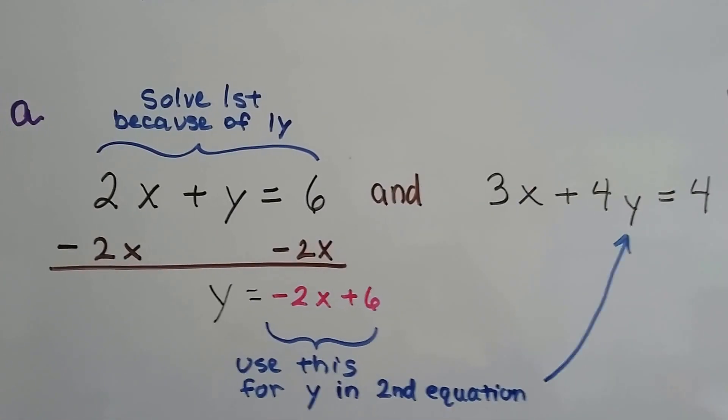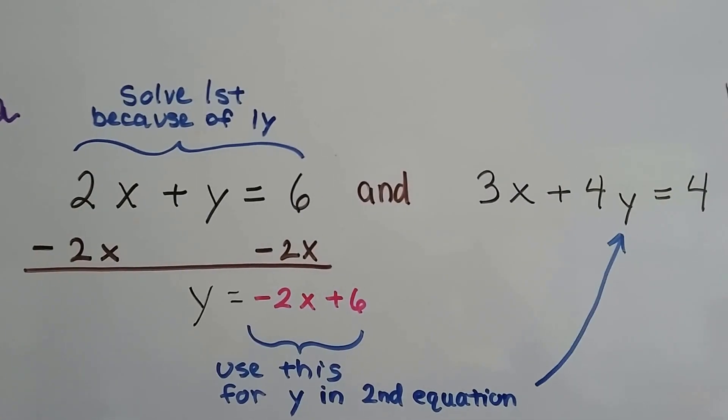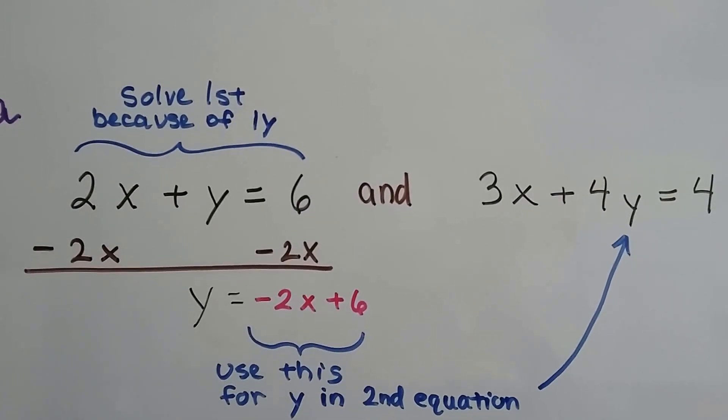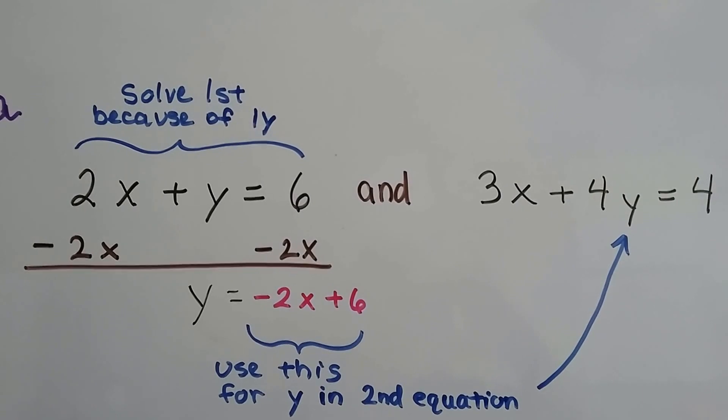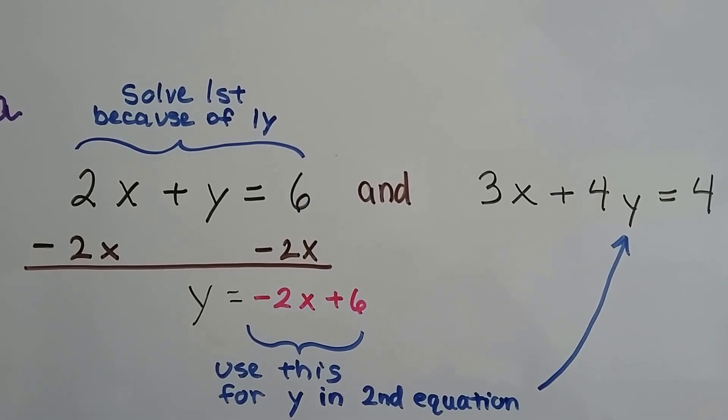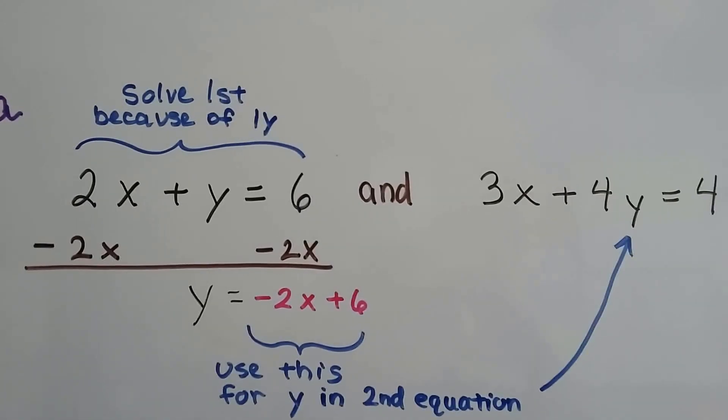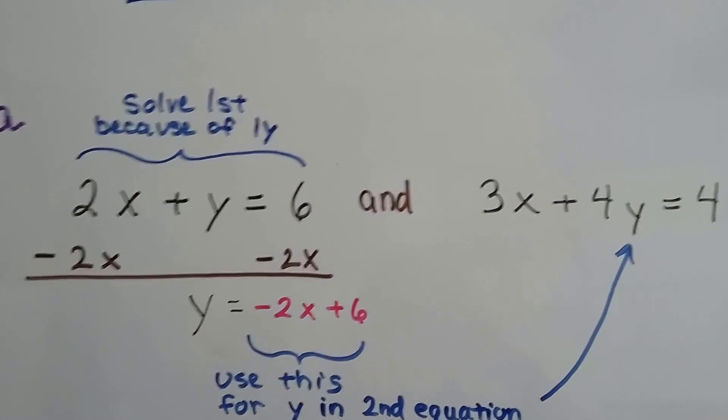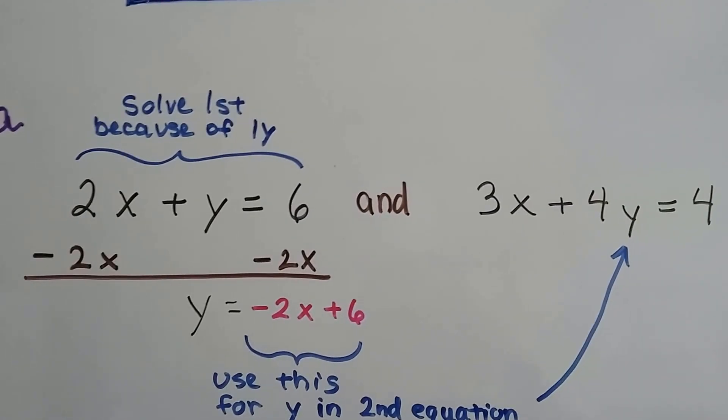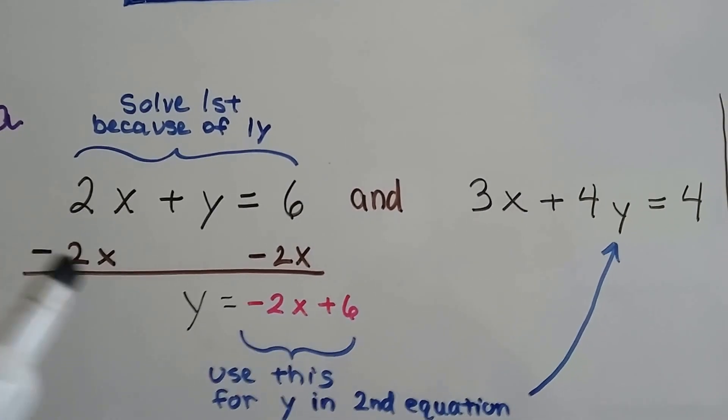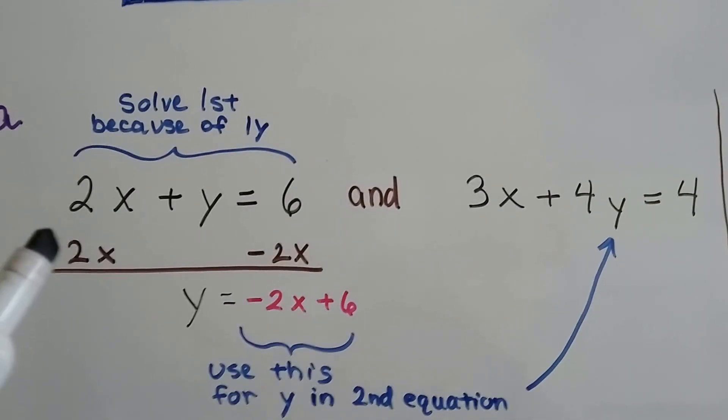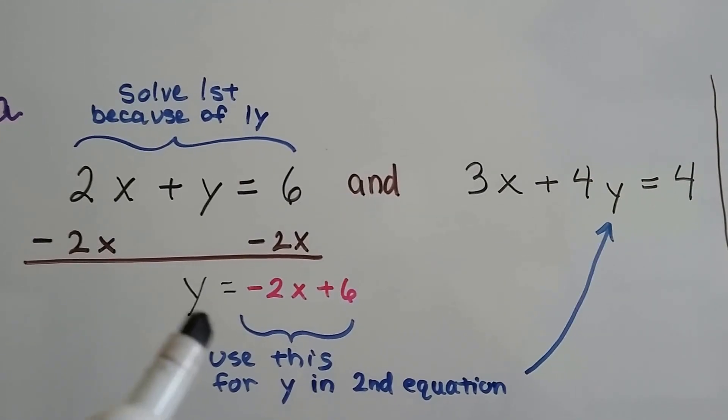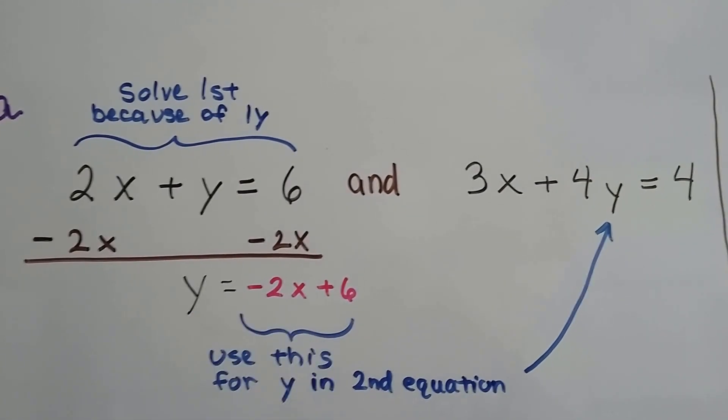So the first thing I'm going to do when I look at this system of equations, I've got 2x plus y equals 6 and 3x plus 4y equals 4. I'm going to scan both of them and try to find a lone variable, and I see that y all by itself in this first equation. So we're going to solve this one first because of that one y. We're going to add a negative 2x to each side of this equation to isolate the y.